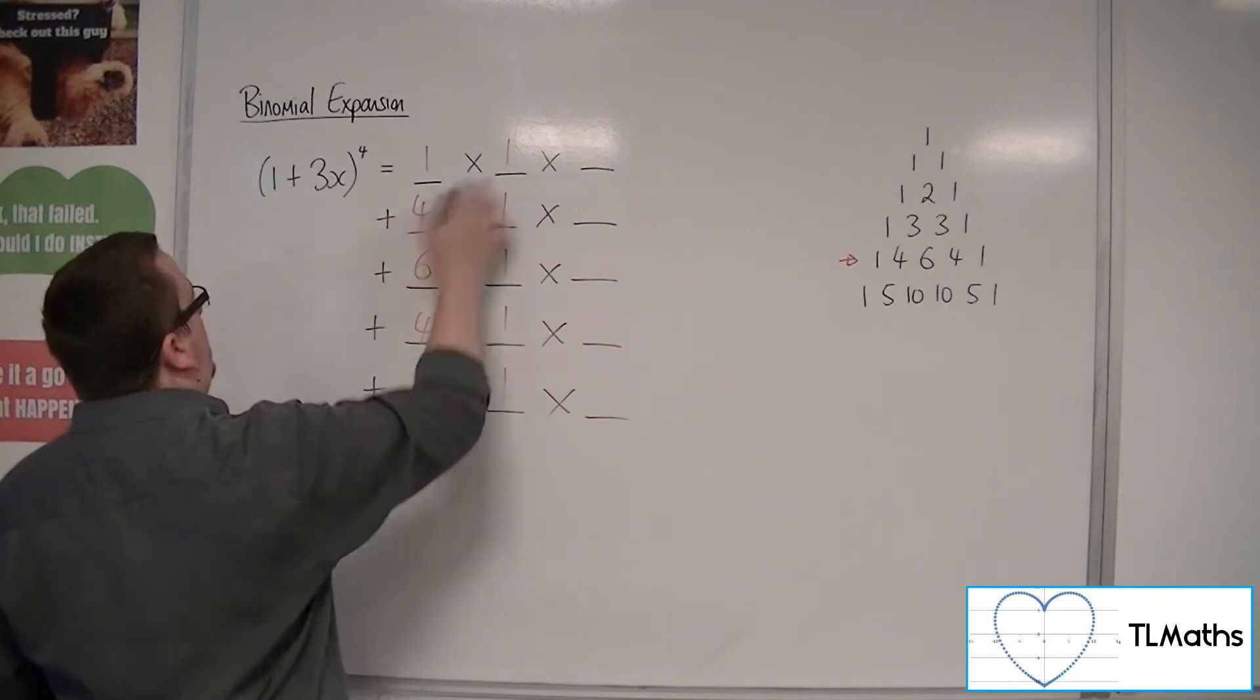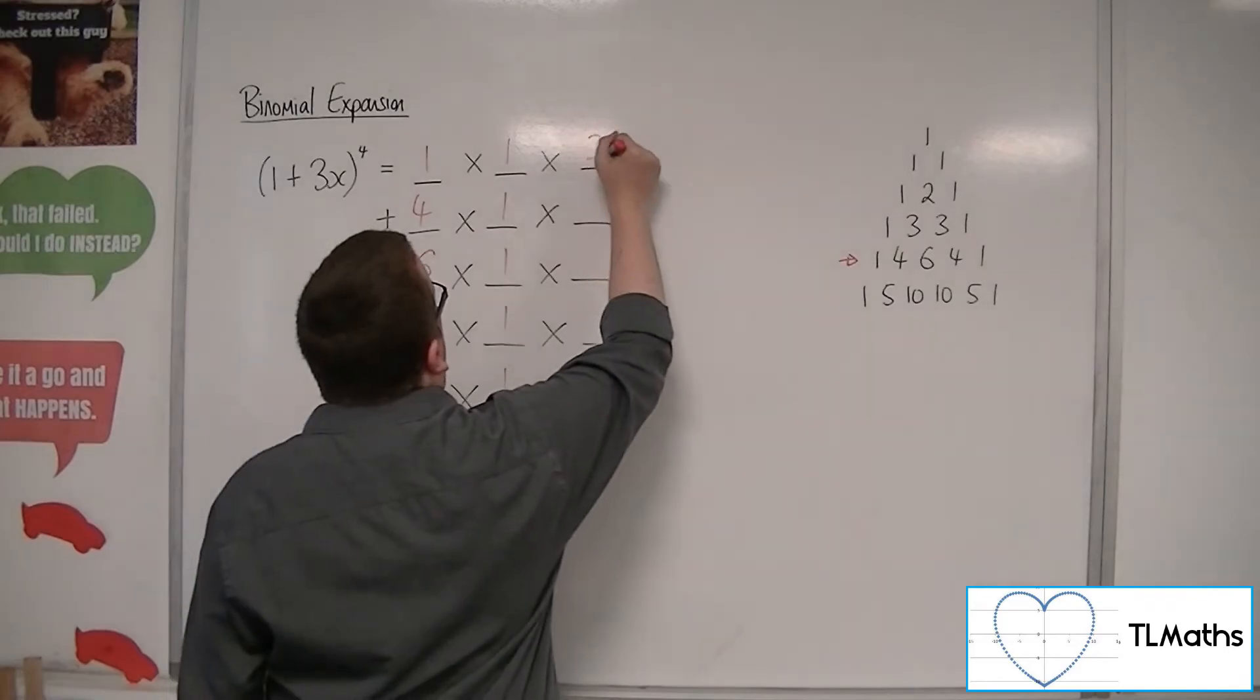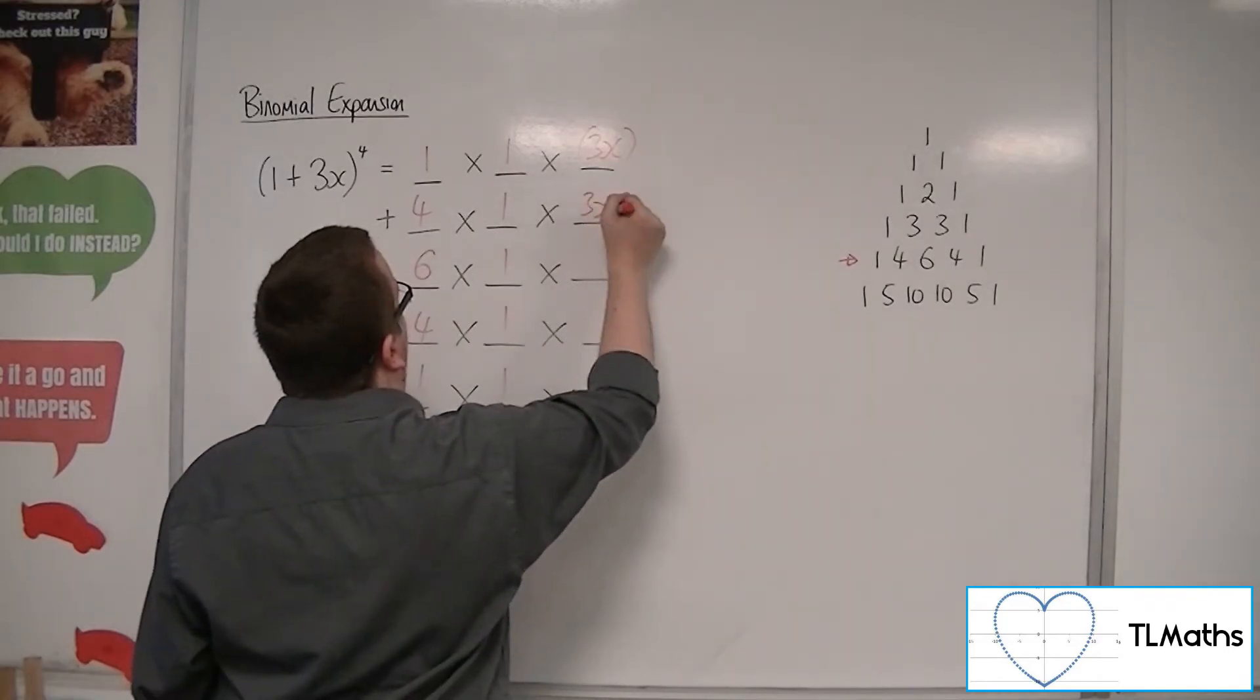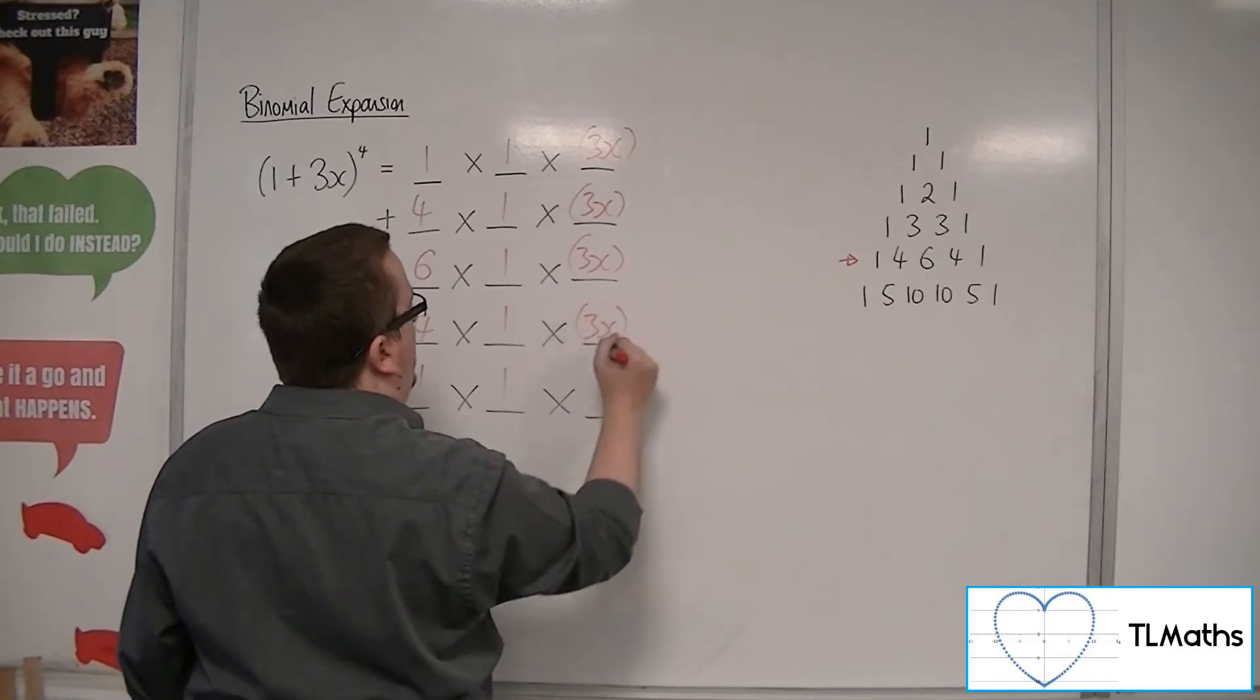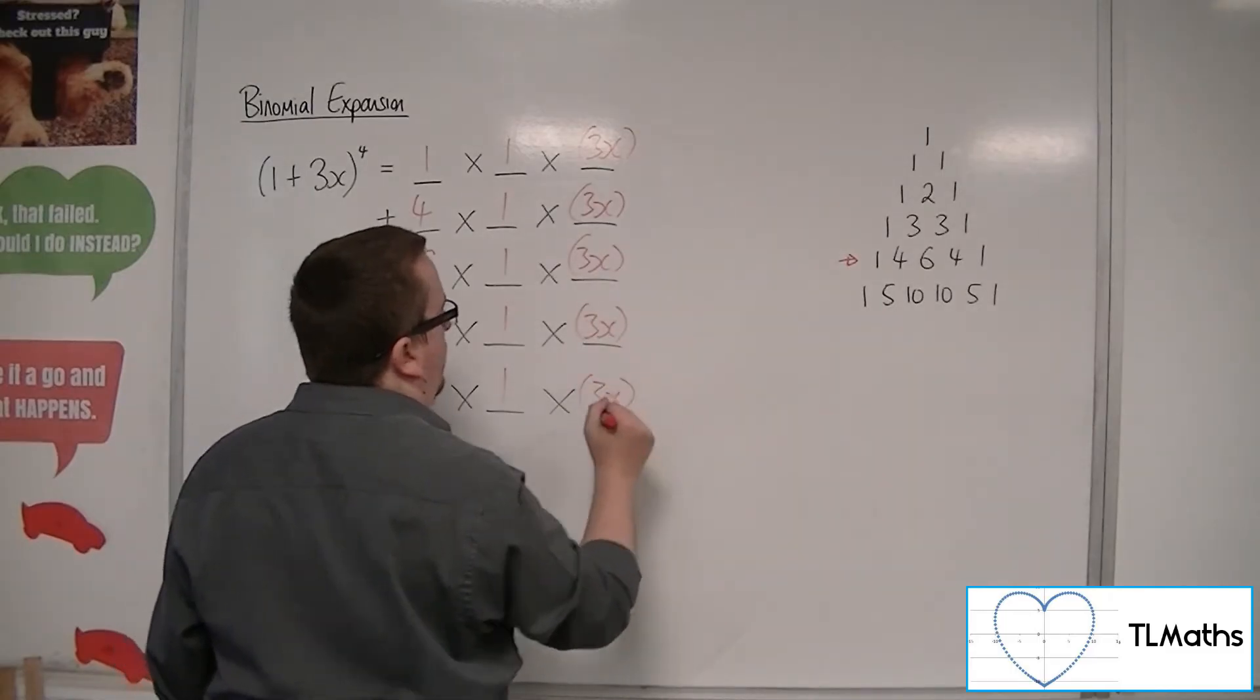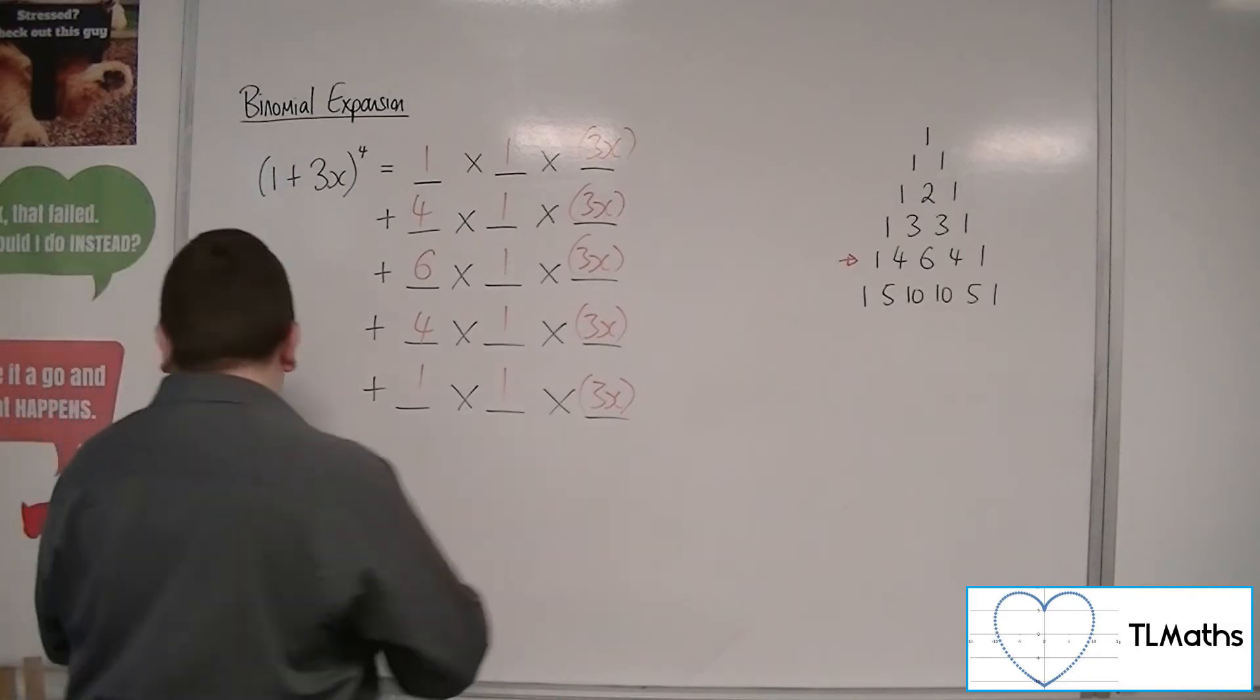And B, the final column, is the 3x. Now, put the 3x into a bracket to make sure that you remember that the powers are affecting both the 3 and the x. That is important.